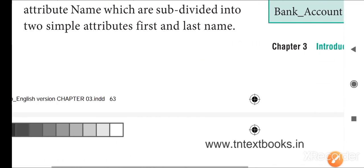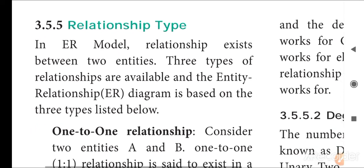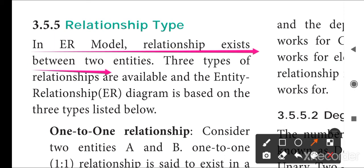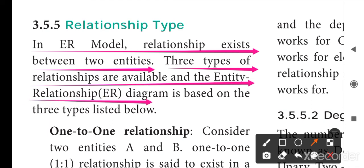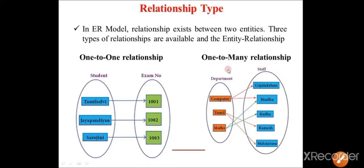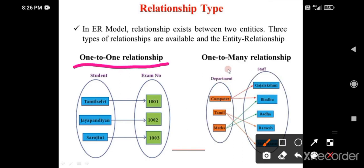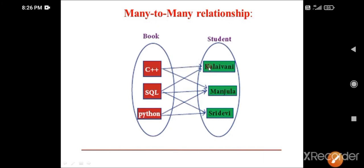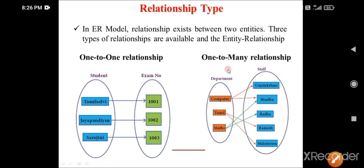The next concept is relationship types. In the ER model, a relationship exists between two entities. There are three types of relationships: one-to-one relationship, one-to-many relationship, and many-to-many relationship.